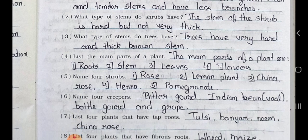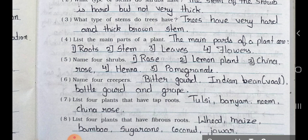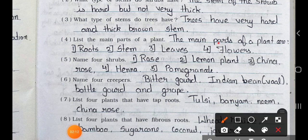Question 4: List the main parts of a plant. Answer: The main parts of a plant are number 1 roots, number 2 stems, number 3 leaves, and number 4 flowers. Question 5: Name 4 shrubs. Answer: Number 1 rose, number 2 lemon plant, number 3 china rose, number 4 heena, and number 5 pomegranate.